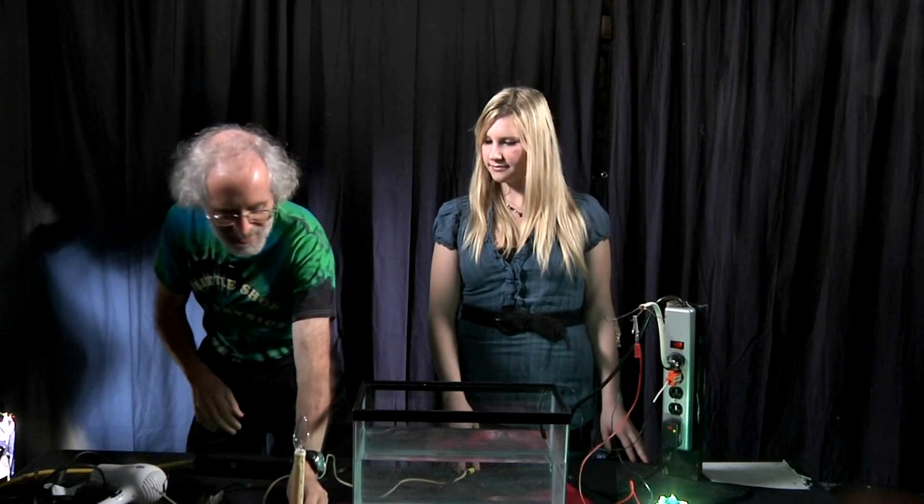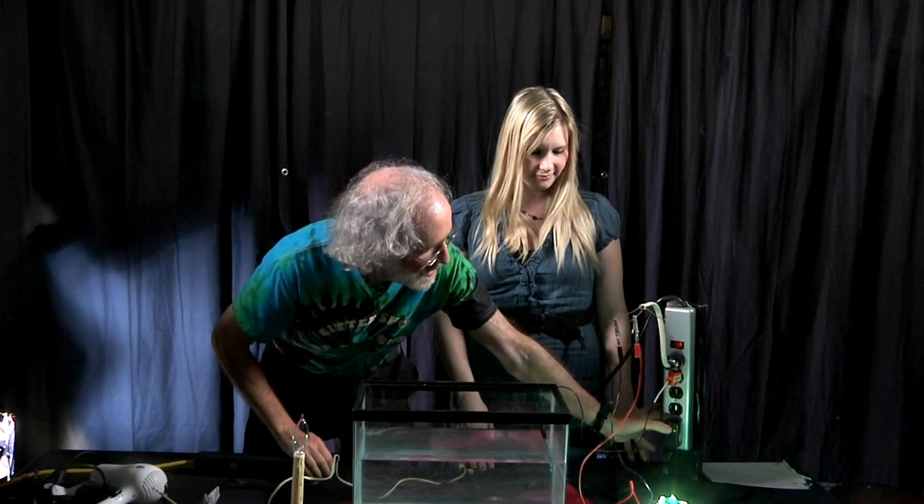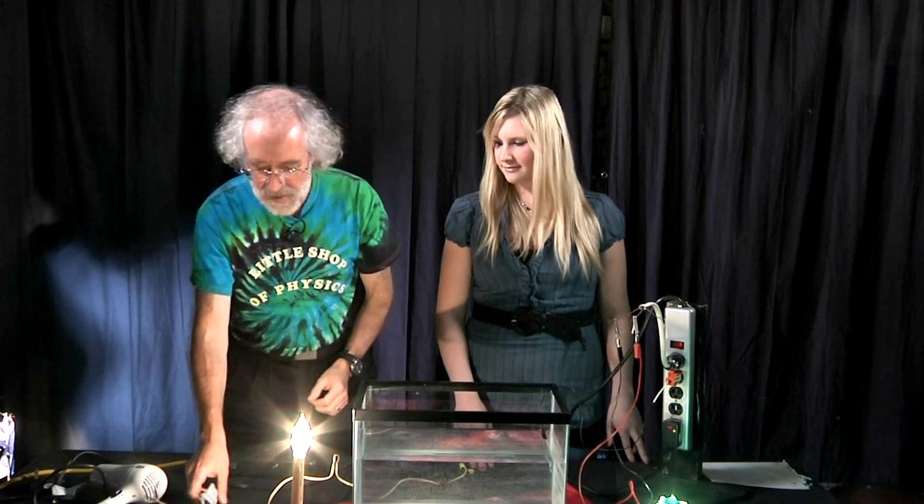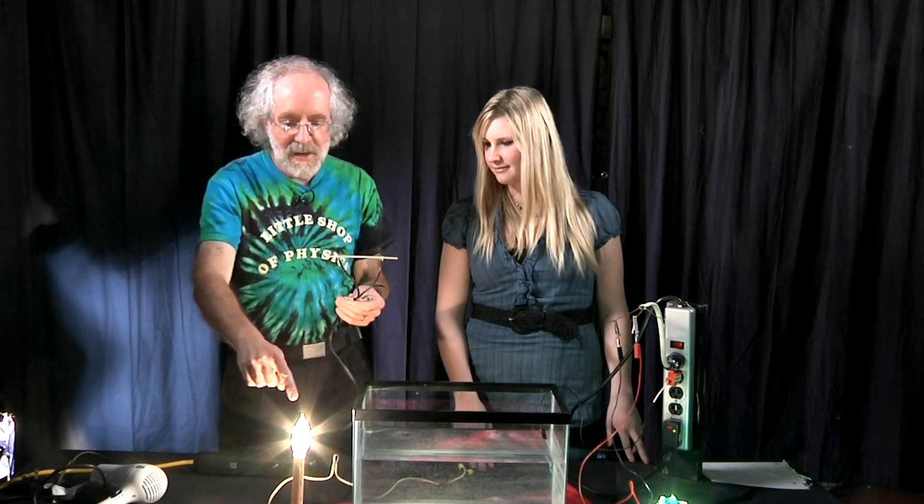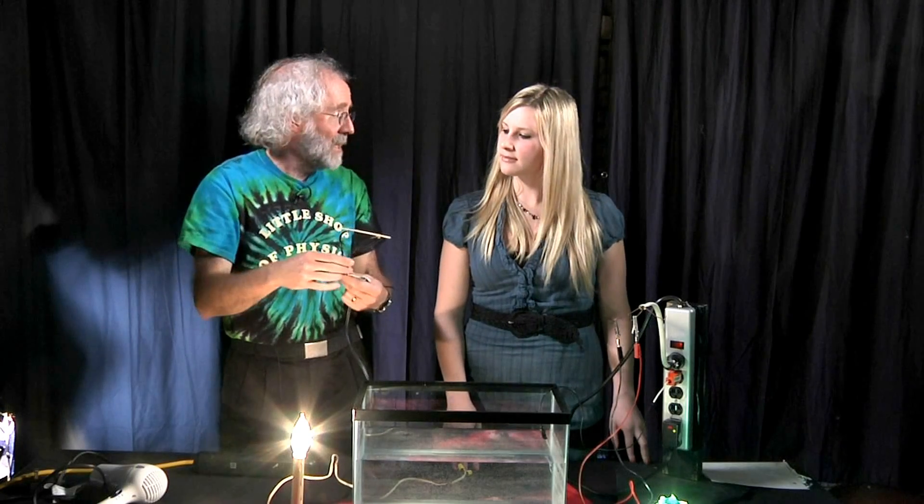Now, next up we're going to do this light bulb right here. And this light bulb we're going to plug in and turn on. And it's connected to a special plug here. And this is a ground fault interrupter. And the two wires that are connected to this lamp are connected right here. So this is my hot wire. This is my neutral wire.